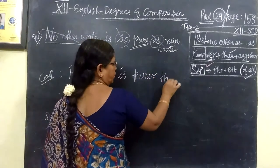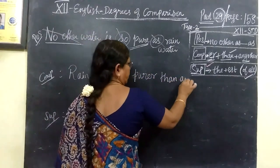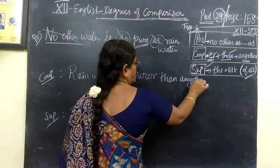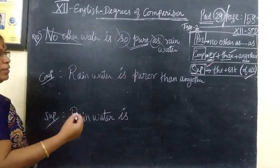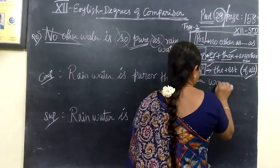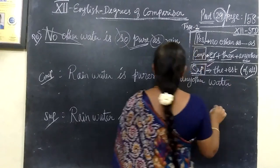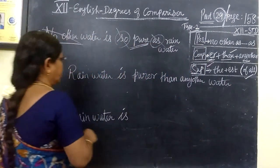Then any other. So we have written E-R than any other. Any other what? Any other water. Any other water. So here we use the structure.